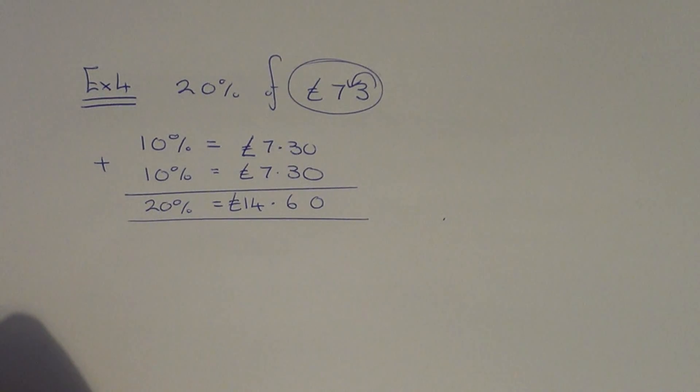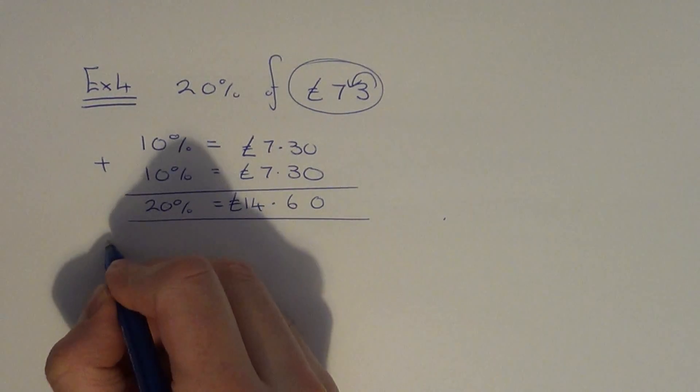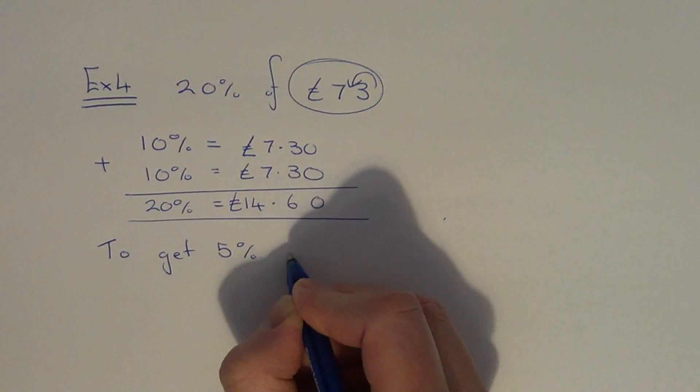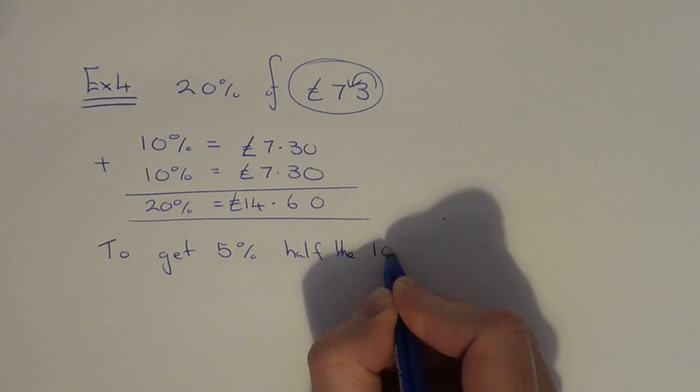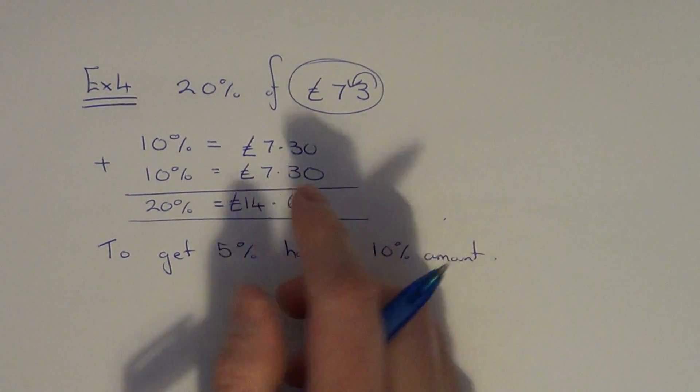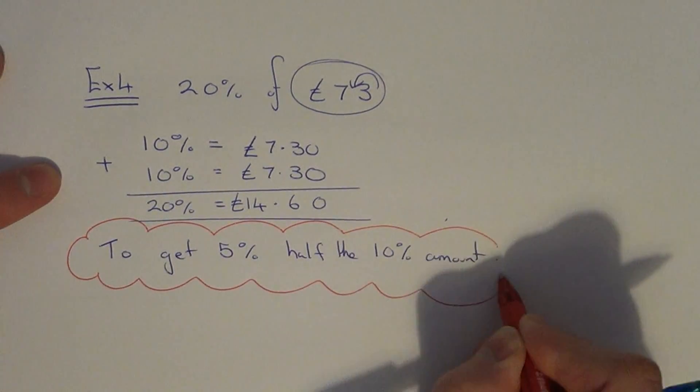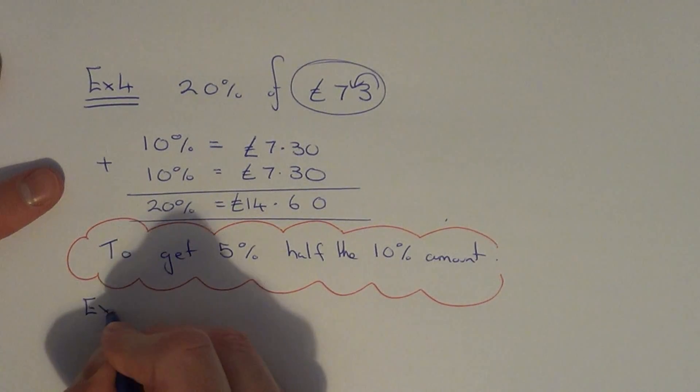Another thing with the 10% method is that you can also work out 5%. To get 5% you just half the 10% amount. So let's do one last example.